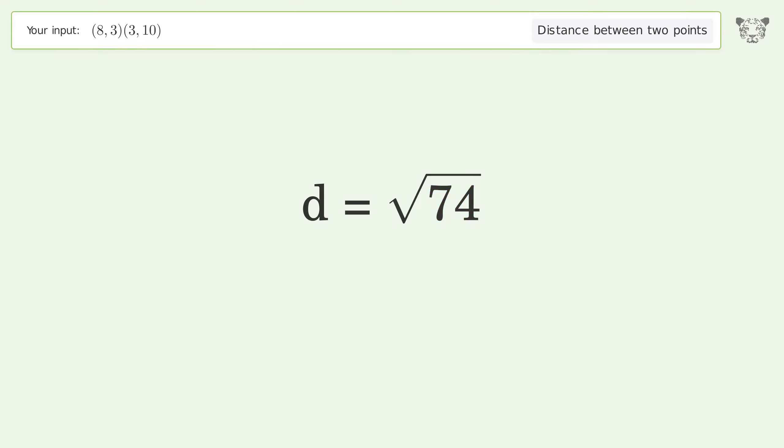And so the distance between the two points is the square root of 74, or 8.602.